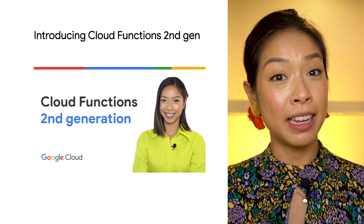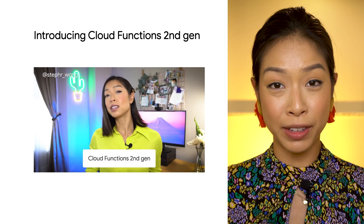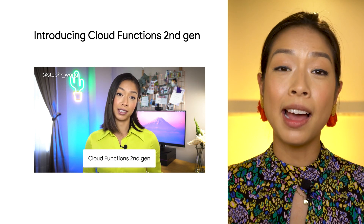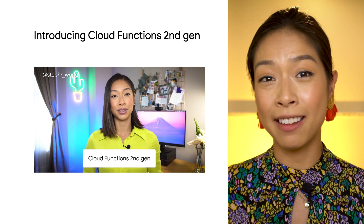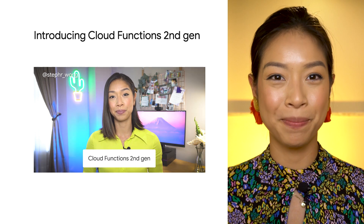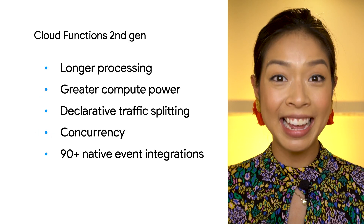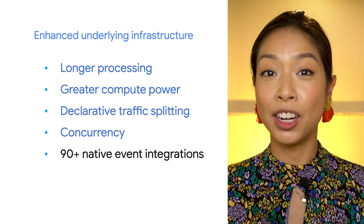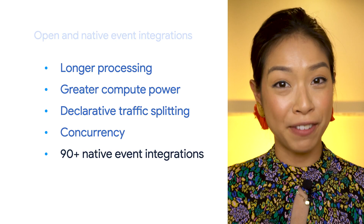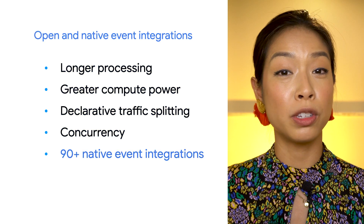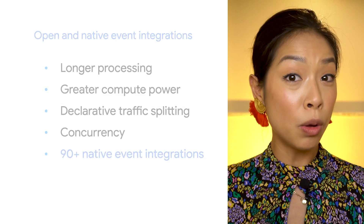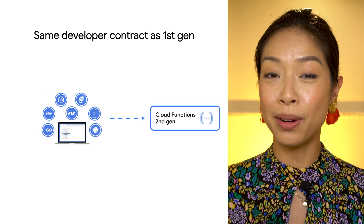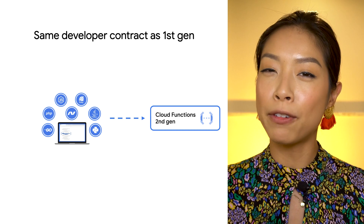I introduced some of this new functionality embedded into the new generation of Cloud Functions, but today let's take a deeper dive into how these functions in Second Gen work. These new features can be categorized into two key themes: enhanced underlying infrastructure and greater event integrations based on the open source spec Cloud Events, all while maintaining the same developer contract. Write your code, deploy it, and let the serverless platform handle the rest.